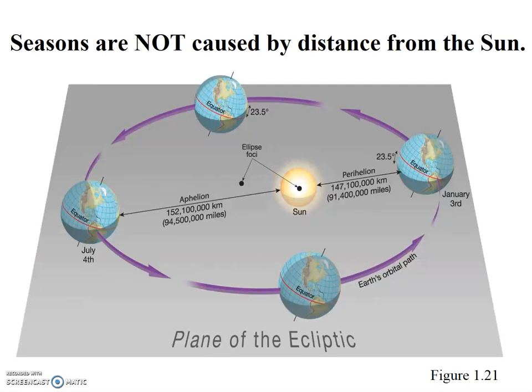As we have mentioned previously, seasons are one of the most misunderstood physical geography concepts. Notably, many people incorrectly believe that the seasons are caused by the varying distance between the Sun and the Earth. Folks think that summer is when Earth is closer to the Sun, and winter is when Earth is farther from the Sun. This is false.